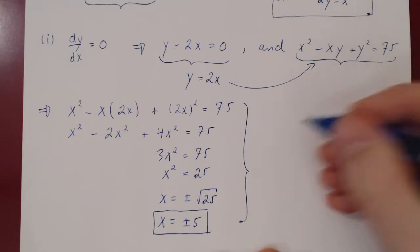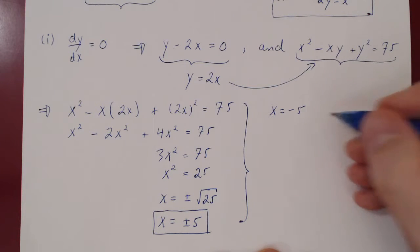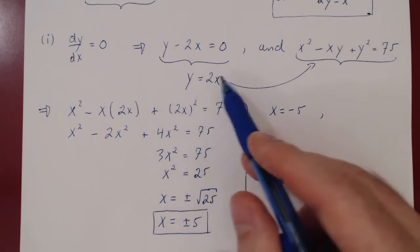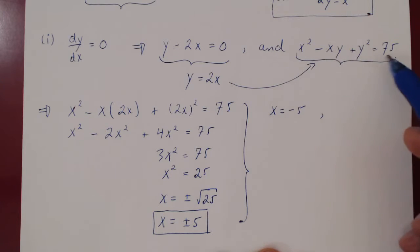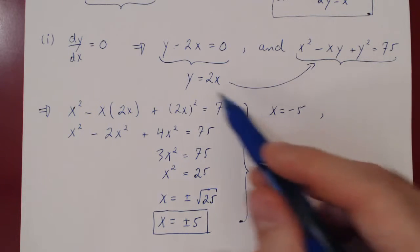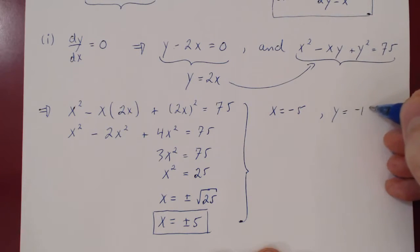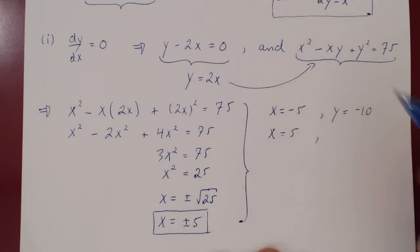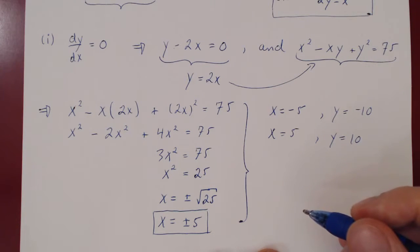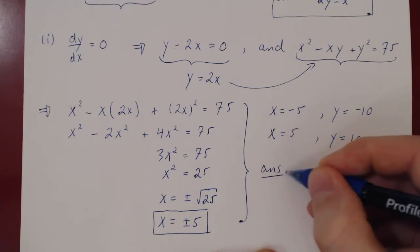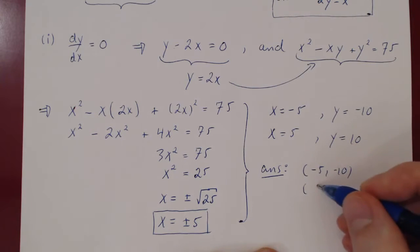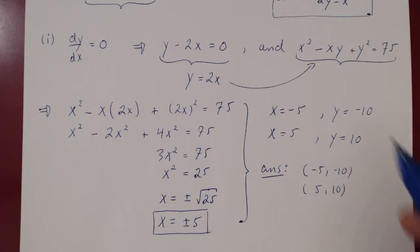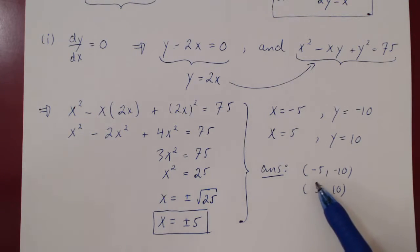We need both x and y values for each point. Using y equals 2x: if x equals negative 5, then y equals negative 10; if x equals positive 5, then y equals positive 10. So there are only two points on the curve where the tangent line is horizontal: (negative 5, negative 10) and (positive 5, positive 10).